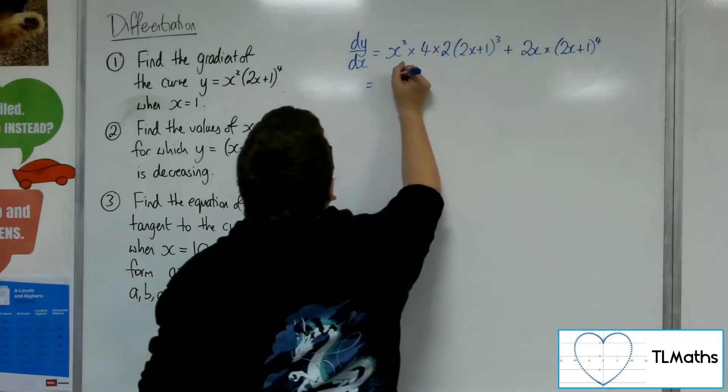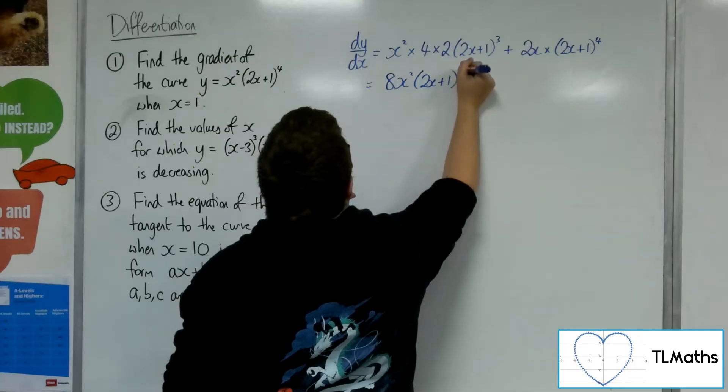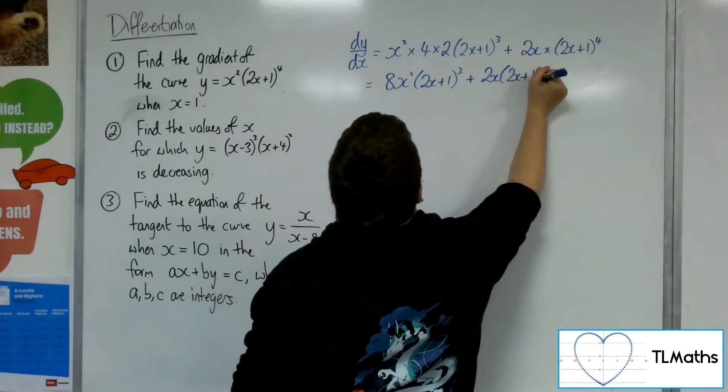so 2x times 2x plus 1 to the 4. So we'll have 8x squared times 2x plus 1 cubed, plus 2x times 2x plus 1 to the 4.